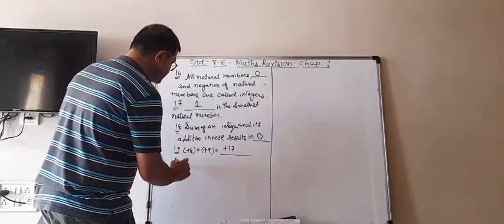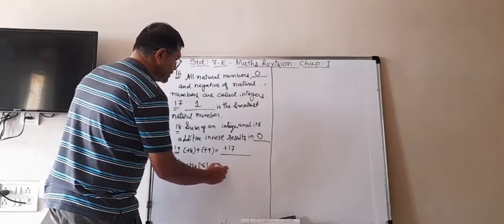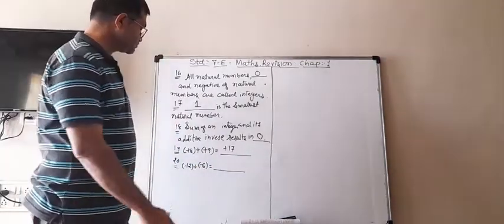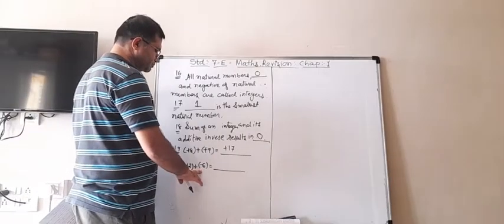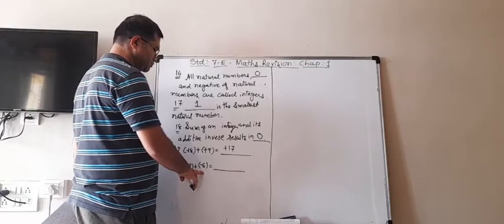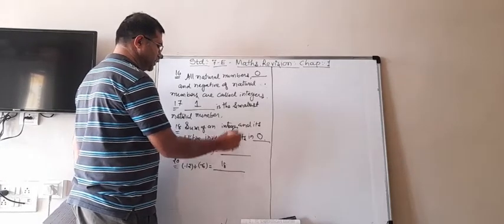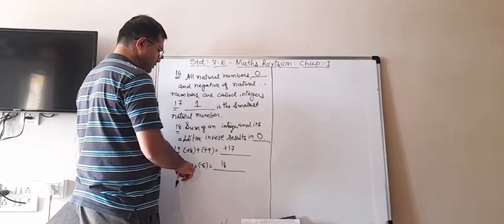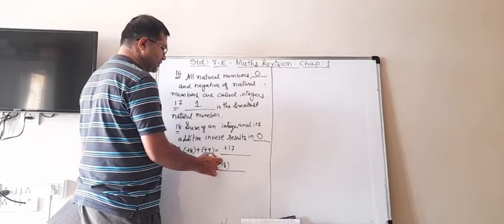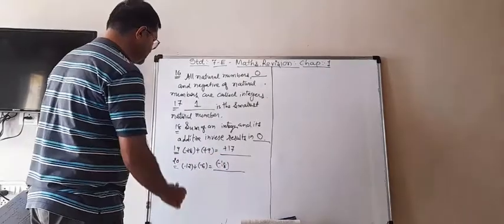Blank 20: (-12) + (-6). Both have the same sign, so 12 + 6 = 18, but the greater number has a negative sign, so the answer is -18.